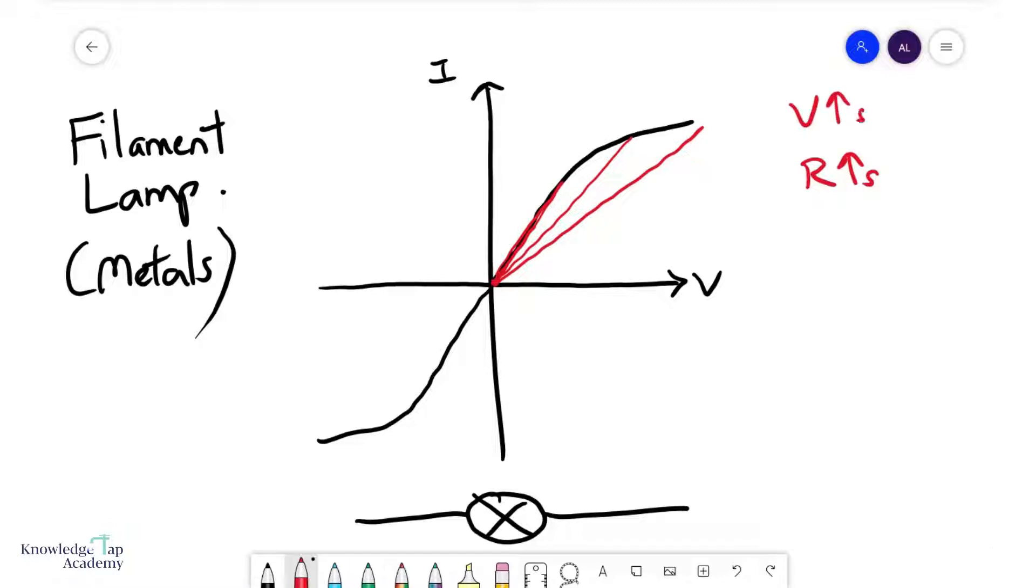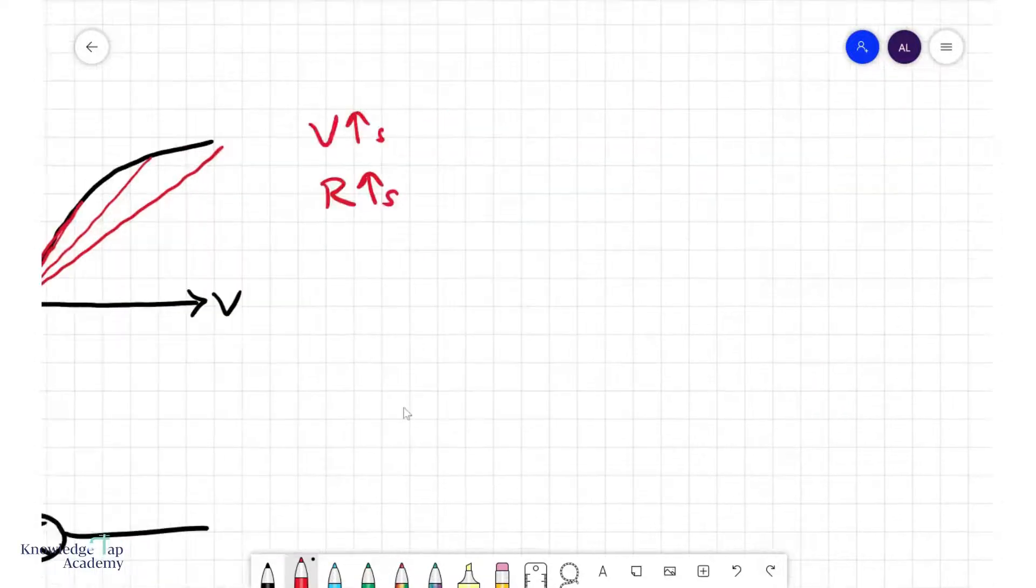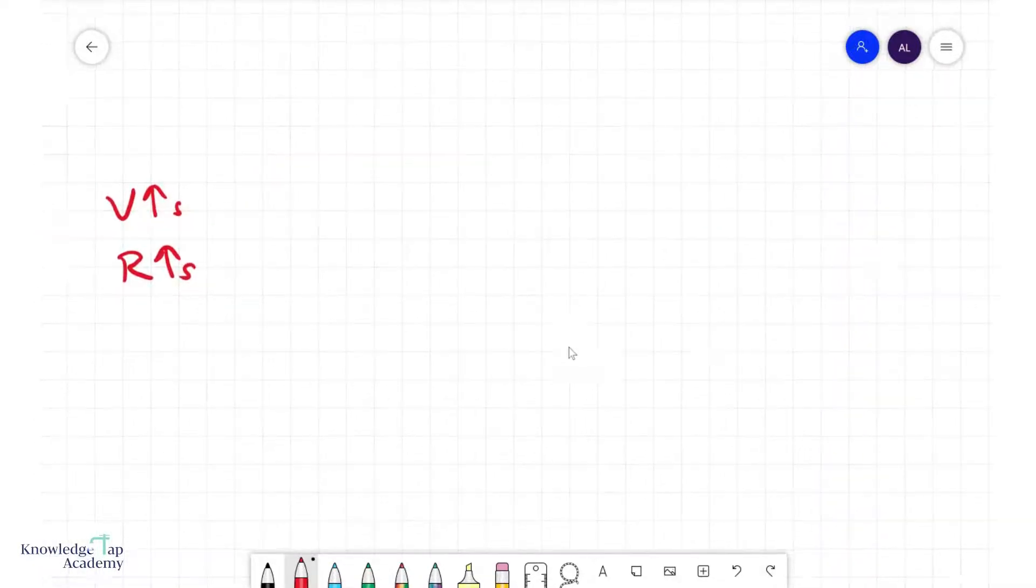We need to briefly understand why this happens. Let's understand how metals work. Basically, when your potential difference goes up, there is more energy dissipated by unit charge, and that inevitably causes the temperature of your system to increase. When your temperature increases, there are two separate effects that occur.